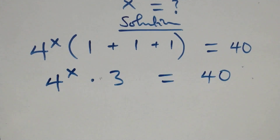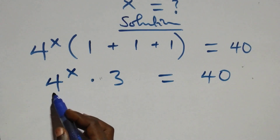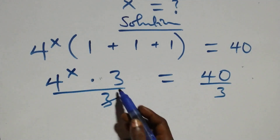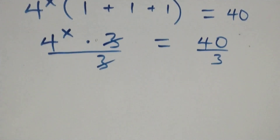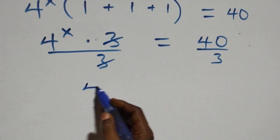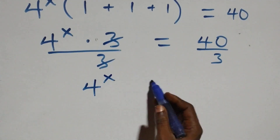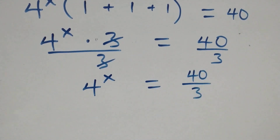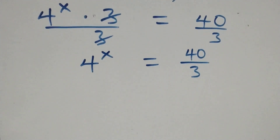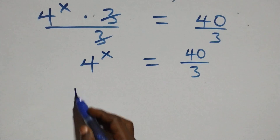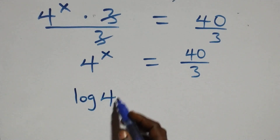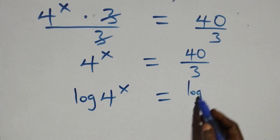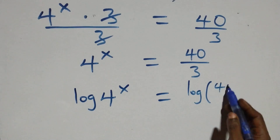The next step, we divide both sides by 3. The 3s cancel each other, and what we have left becomes 4 raised to power x equals to 40 over 3. Then here we take the log on both sides: log of 4 raised to power x equals log of 40 over 3.